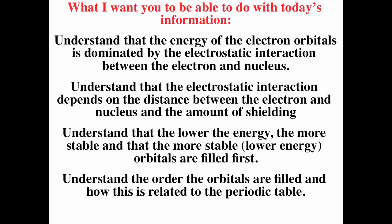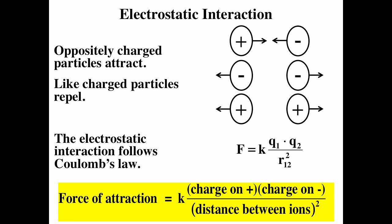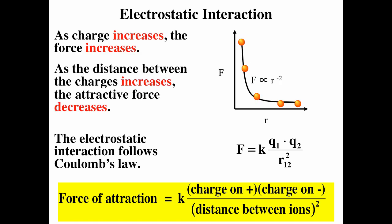The energy of electron orbitals depends on electrostatic interaction. With two charged particles, opposite charged particles attract and like charged particles repel. Electrostatic interaction follows Coulomb's law: F equals K times the charge on particle one times the charge on particle two, divided by the distance between the two particles squared. The bigger the charge, the stronger the interaction; the shorter the distance, the stronger the interaction.